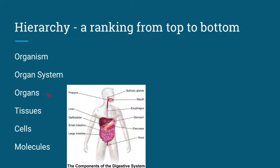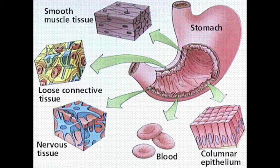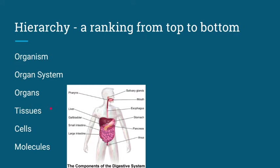Organs themselves are made up of things we call tissues. Tissues are just a bunch of cells that are working together to provide a specific function. In your stomach, you have a lot of different types of tissues that are all layered together, and they provide the function of the organ, which is the stomach. Tissues themselves are made of cells. So as we get smaller and smaller on this hierarchy, we go from organism to organ system, to organs, then smaller to tissues, and smaller than that are cells.